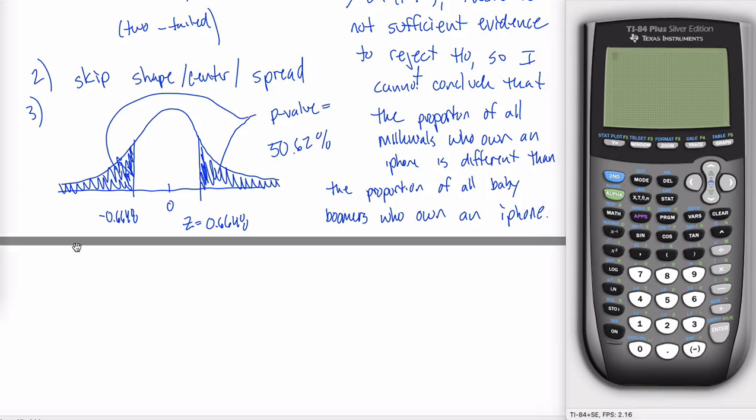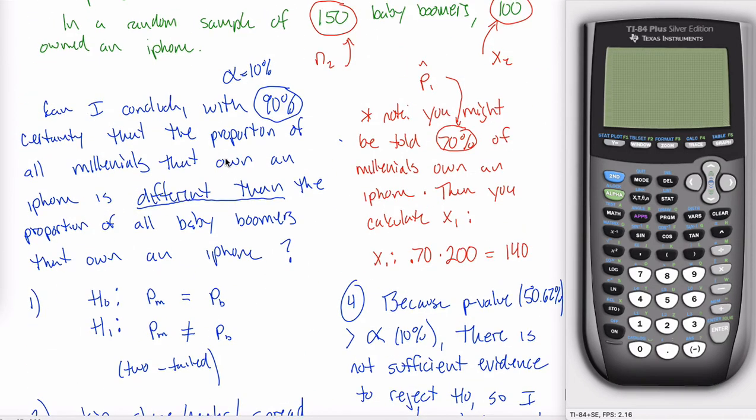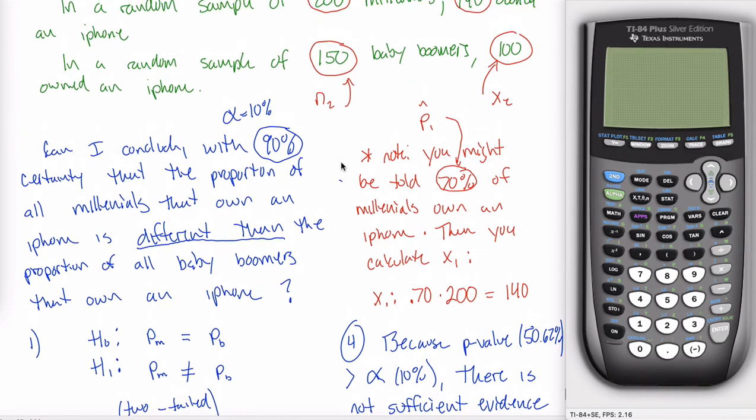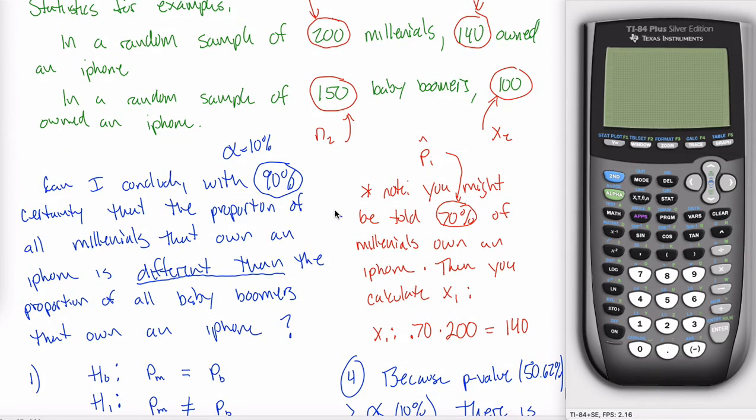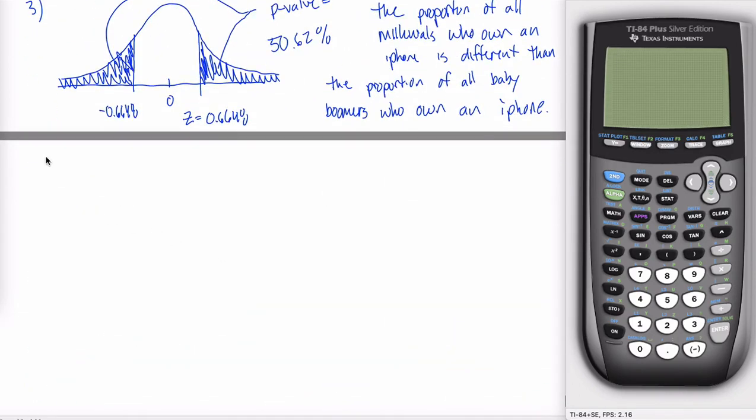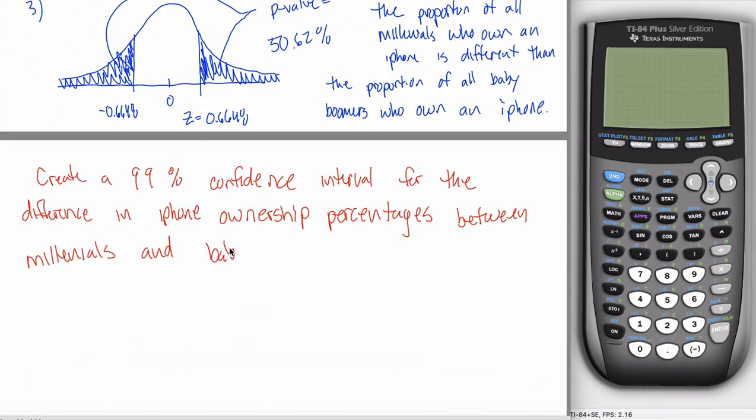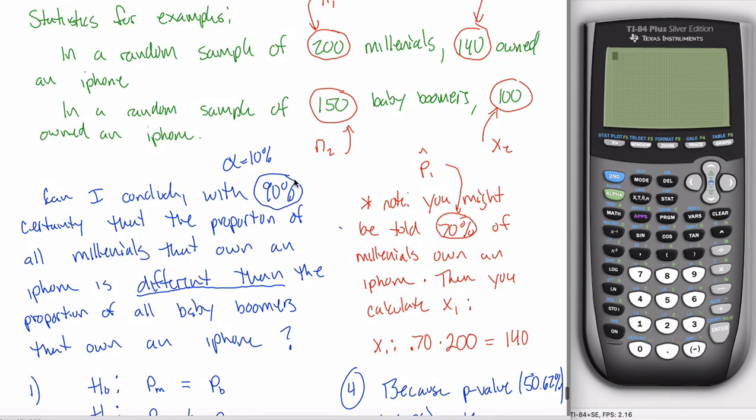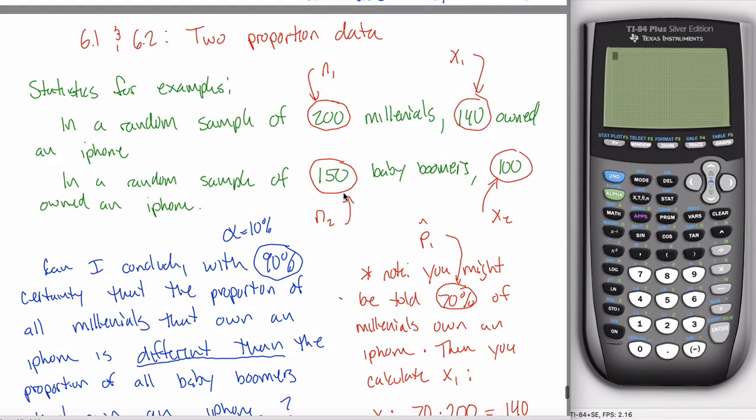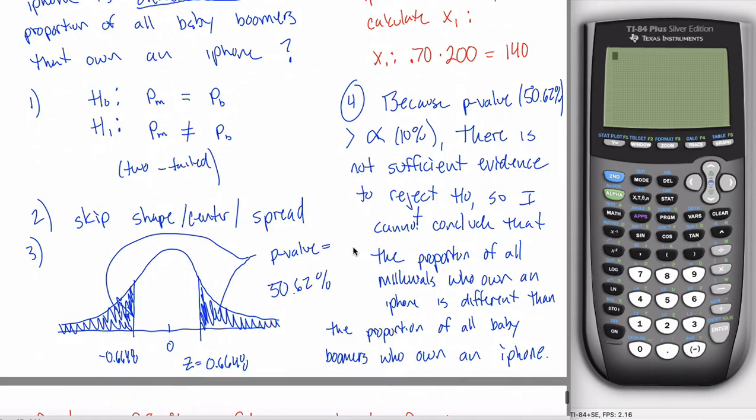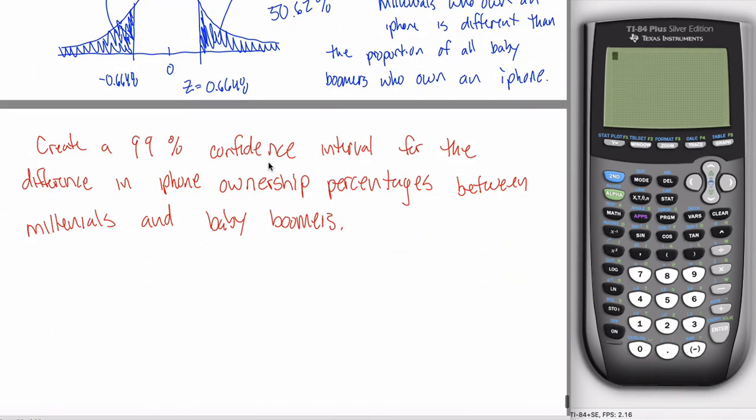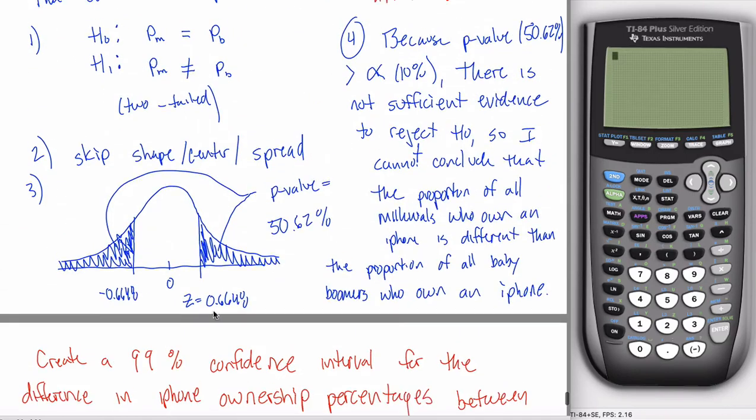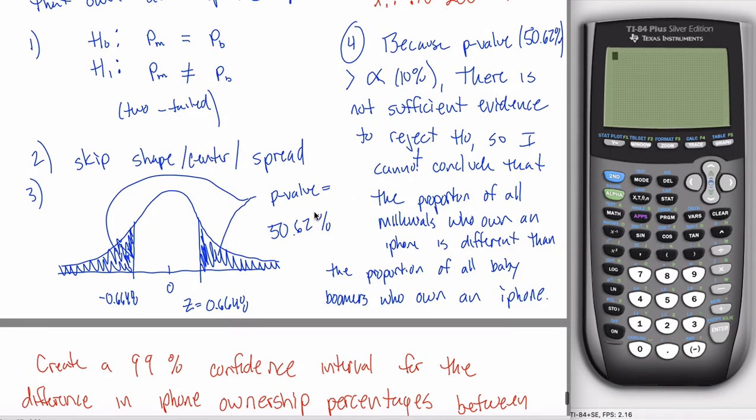What I'd like to do on this one is create a 99% confidence interval for the difference in the proportions of iPhone ownership between millennials and baby boomers. So you probably won't be too surprised to hear that it's going to mimic what we did in the previous video pretty closely, where essentially we're going to type in these four numbers into a calculator function and tell it the level of confidence that we want.